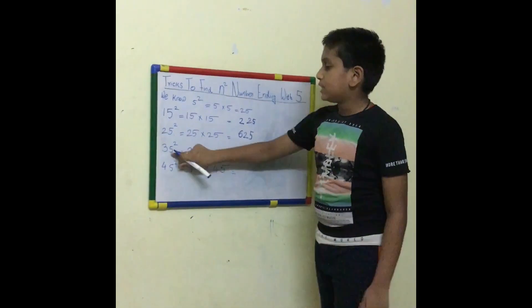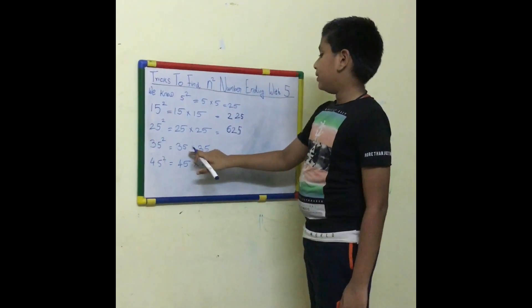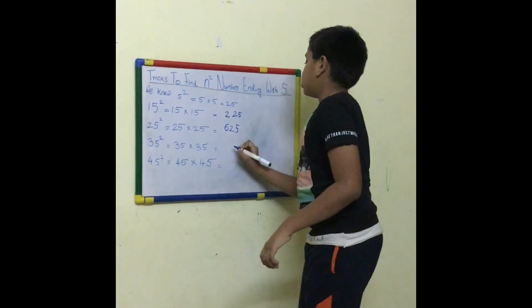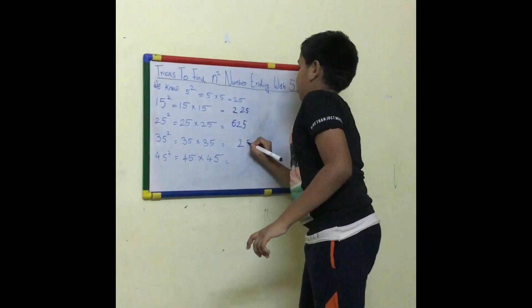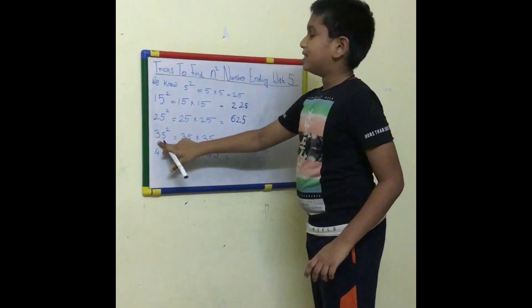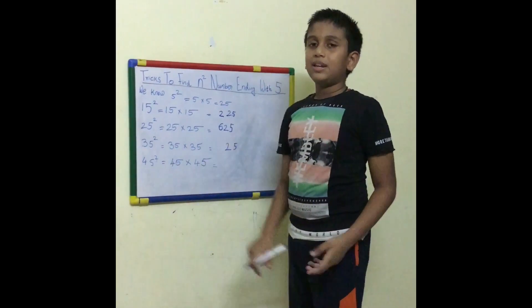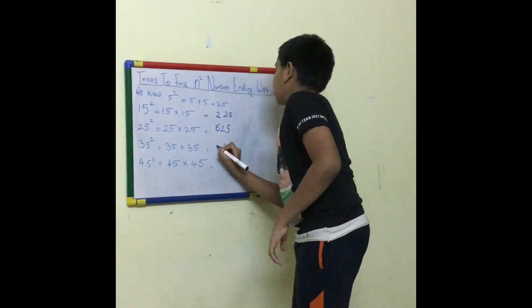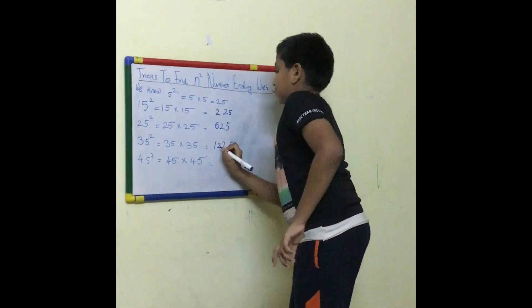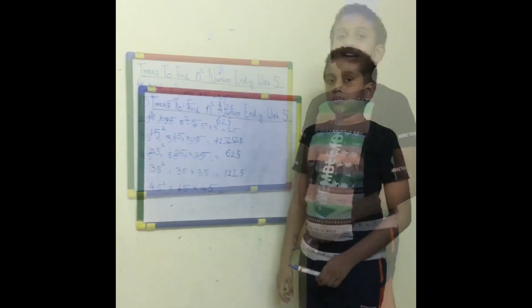Next is 35 squared. 35 squared is 35 into 35. So we have to keep 25. 3's successor is 4. So 3 into 4 is 12. And the answer is 1225.